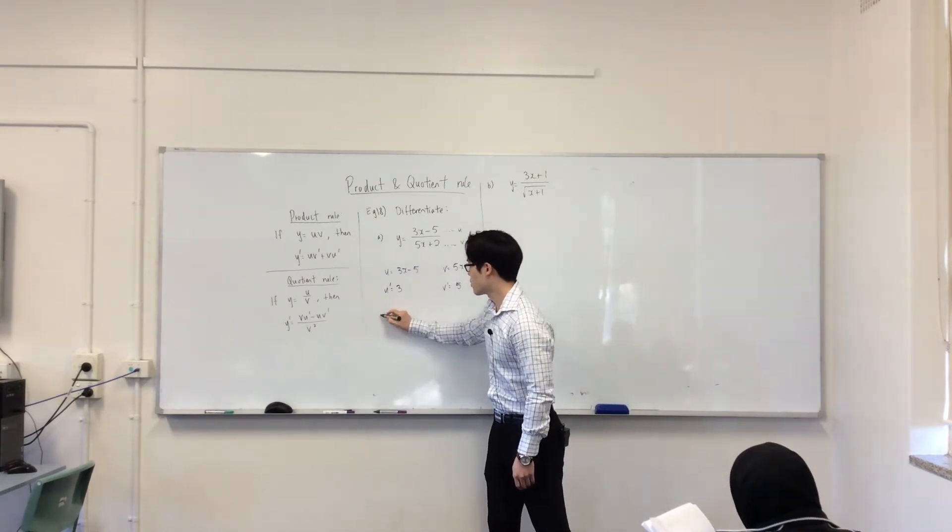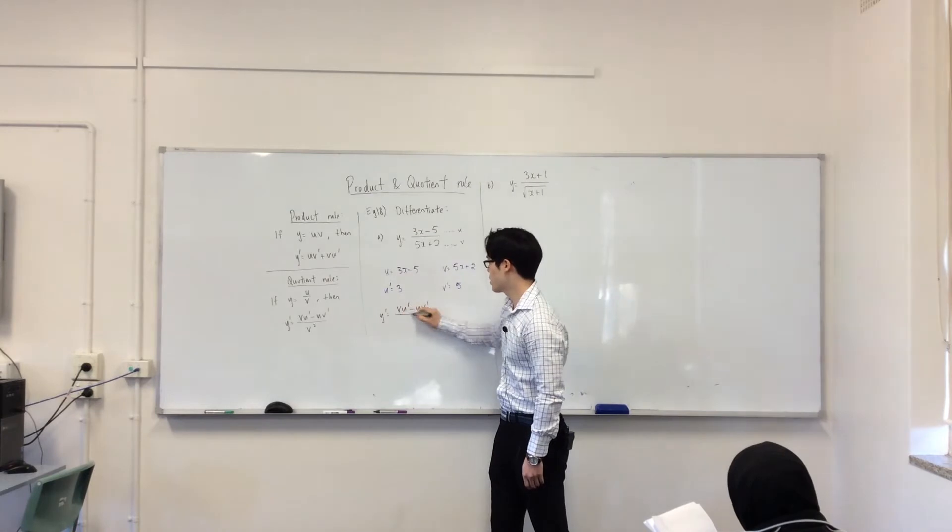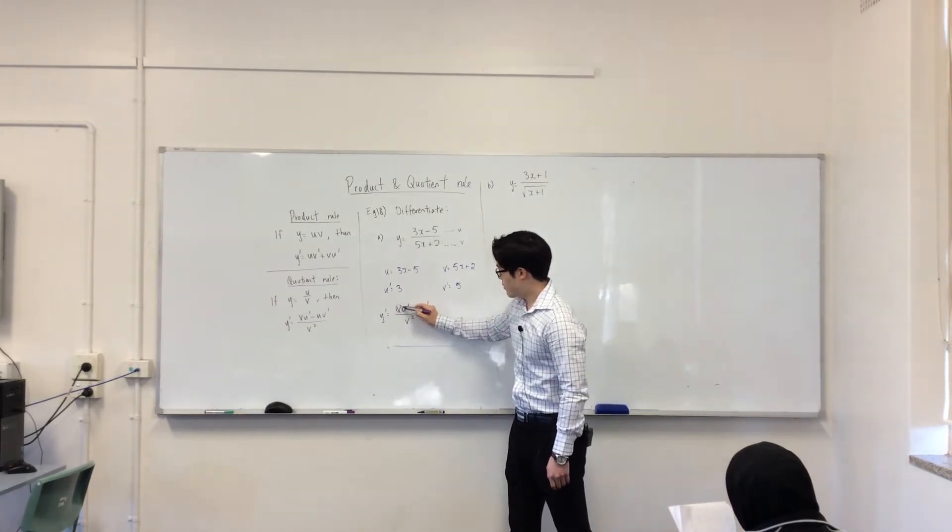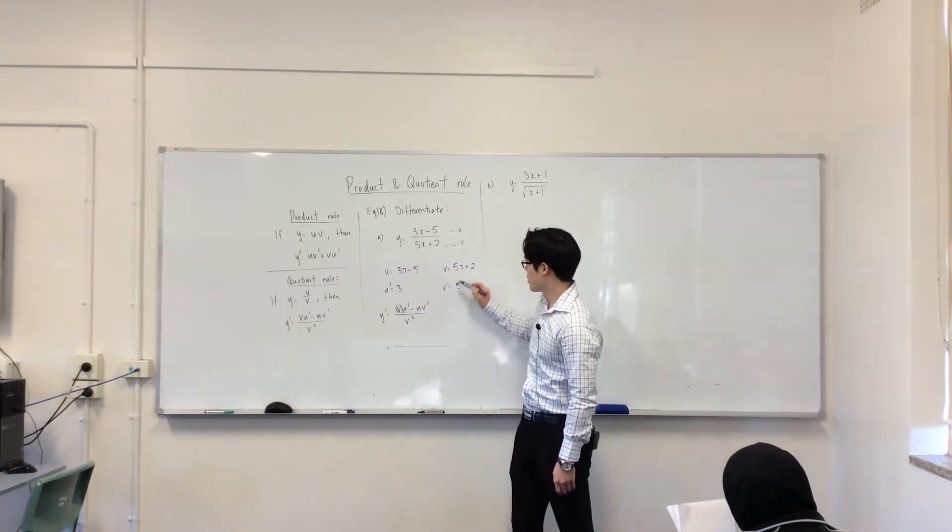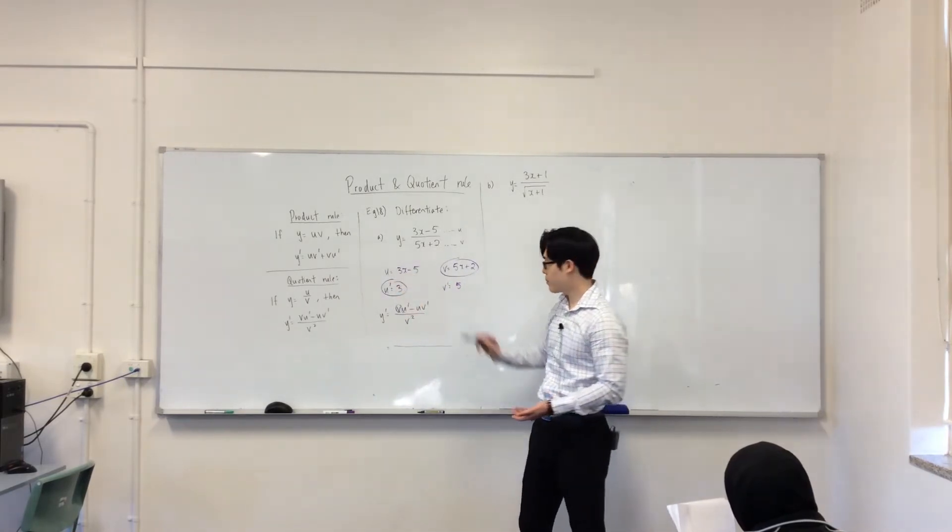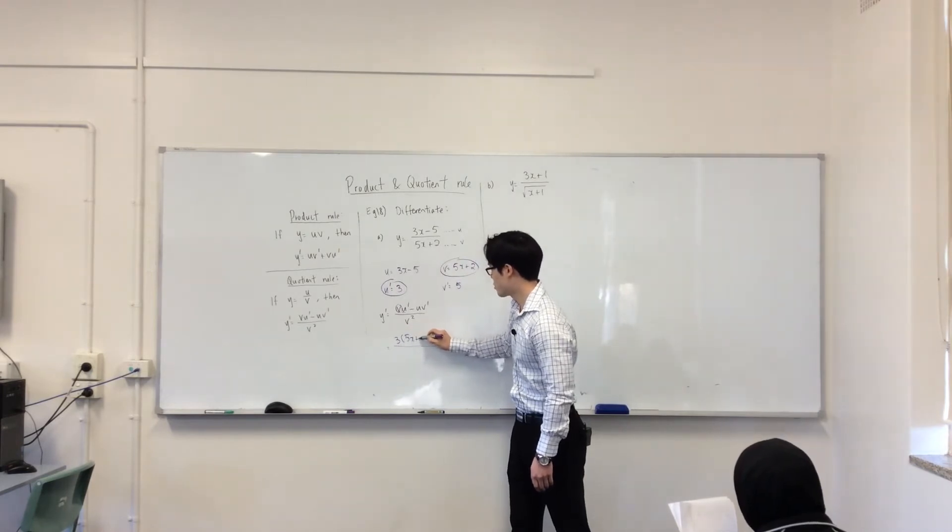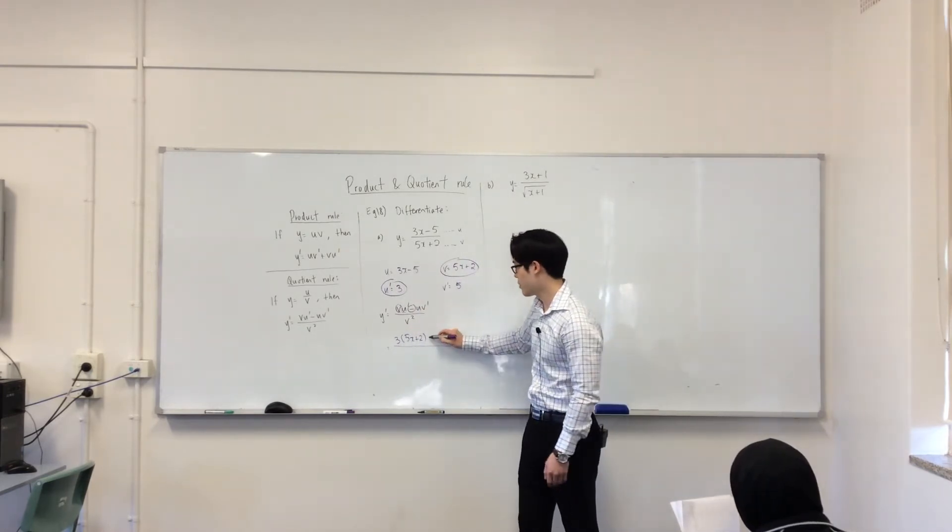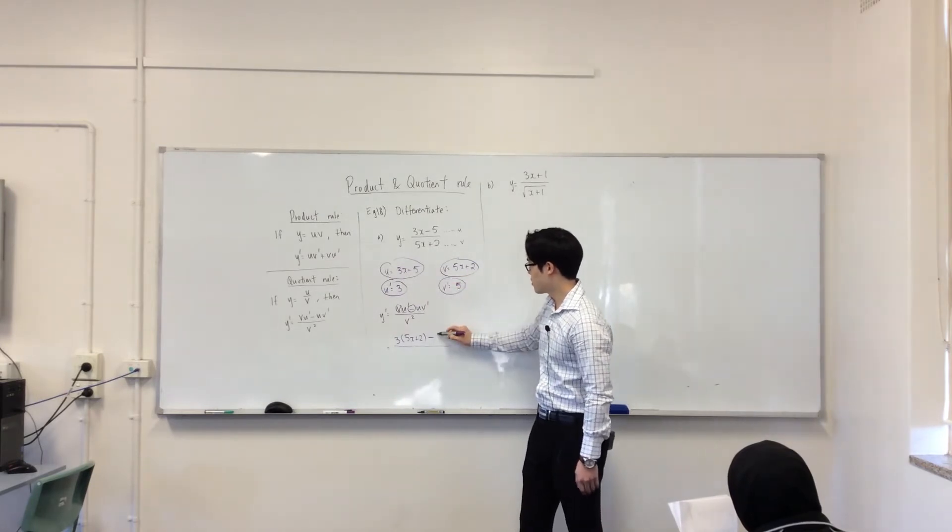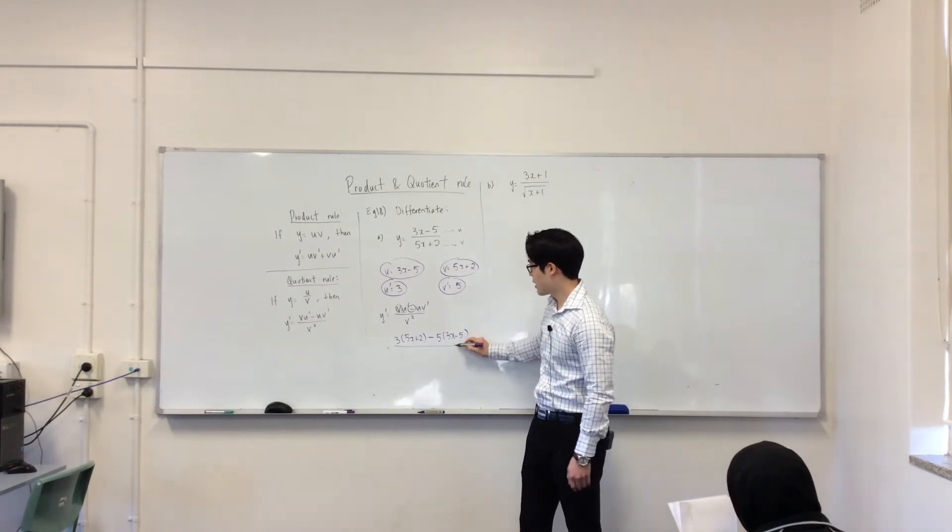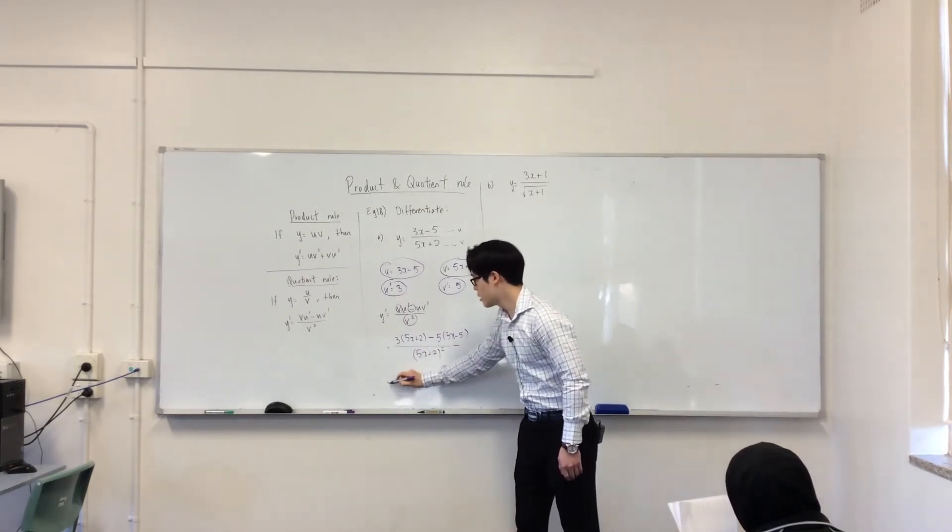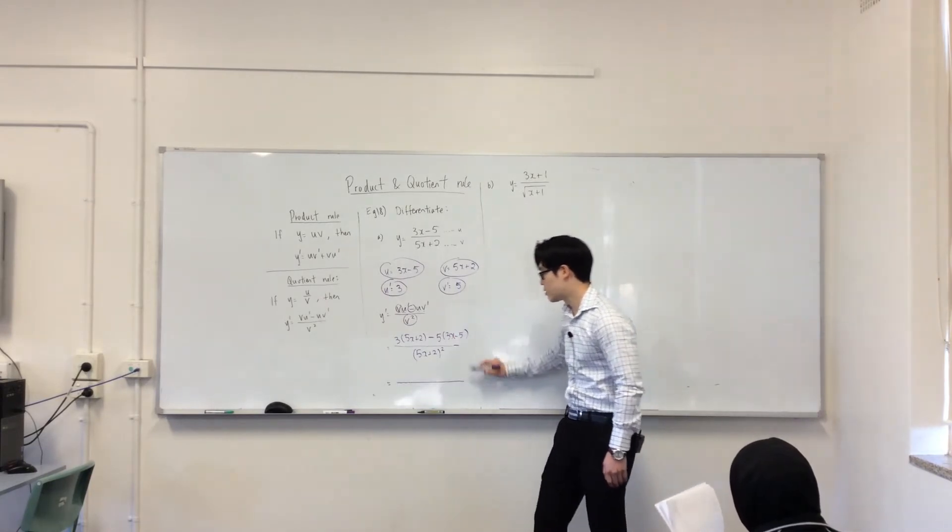So, let me write down the rule. So, y dash is equal to (v u dash minus u v dash) / v^2. So, what's my v u dash? What's my v? So, this times, stay with me, please. So, that's just 3(5x + 2) multiplied. It's a minus now, not a plus. Keep that in mind. Minus u v dash. So, that's my u and my v dash is 5, so it's just this. And then v squared is just that whole thing squared. And then, don't ever expand and simplify the bottom. Leave it as that. It's the top that you need to simplify.